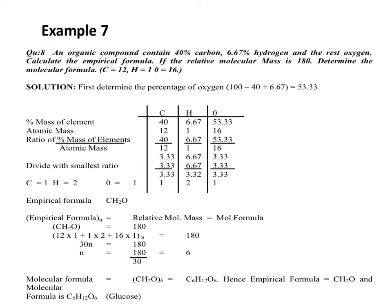Just like before, set up carbon, hydrogen, and oxygen columns. The percentage masses are 40, 6.67, and 53.33 respectively. The atomic masses are carbon 12, hydrogen 1, oxygen 16. The ratio of percentage mass over atomic mass: for carbon, 40 over 12 equals 3.33; for hydrogen, 6.67 over 1 equals 6.67; for oxygen, 53.33 over 16 equals 3.33.